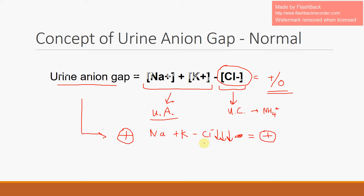If the chloride is low in the urine, that suggests that ammonium is low in the urine — meaning the kidney is unable to excrete protons. That will eventually lead to a positive urine anion gap.